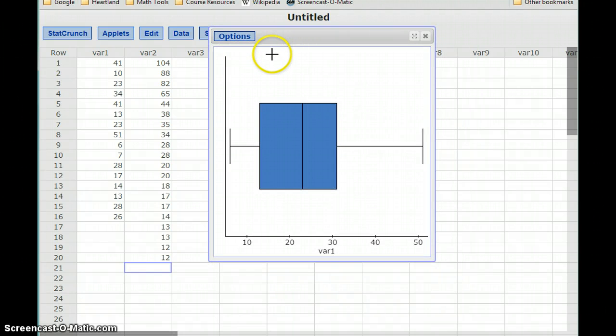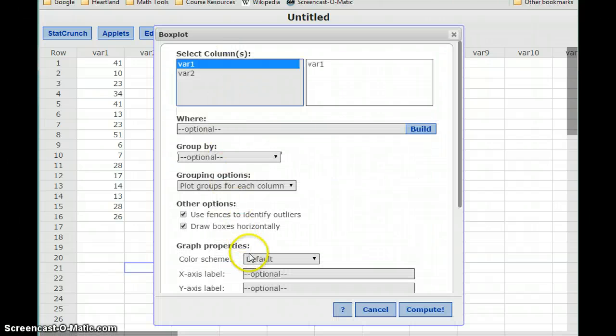I used some of the other options on there to add labels to the main graph, add labels to the x-axis. Those are optional if you're producing a report, things you would want to include. But you could go back to that edit menu for any graphs that we create and always use these graph properties options.